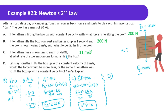Part D: Tonton lifts the box with a constant velocity of 9 meters per second versus 4 meters per second. Would the force be more, less, or the same? Even though 9 is faster, both are constant velocities, so acceleration is zero in both cases. With zero acceleration in both instances, the force is the same — 200 Newtons each time.